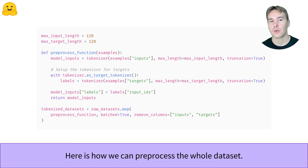Processing the whole dataset is then super easy with the map function. You can pick different maximum lengths for the inputs and targets and choose to pad at this stage to that maximum length by setting padding equal max length. Here, we'll show you how to pad dynamically as it requires one more step.